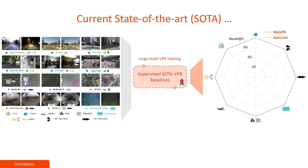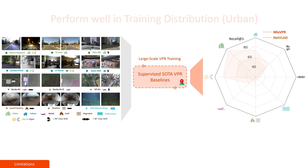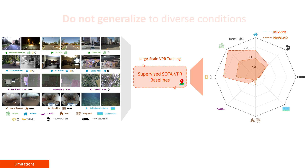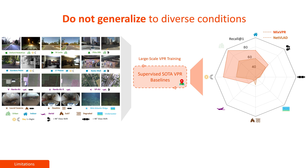When we test current state-of-the-art approaches on this diverse suite, we observe that while they excel in urban driving scenarios similar to their training distribution, they do not generalize to other diverse conditions — a key requirement for a universal VPR solution.